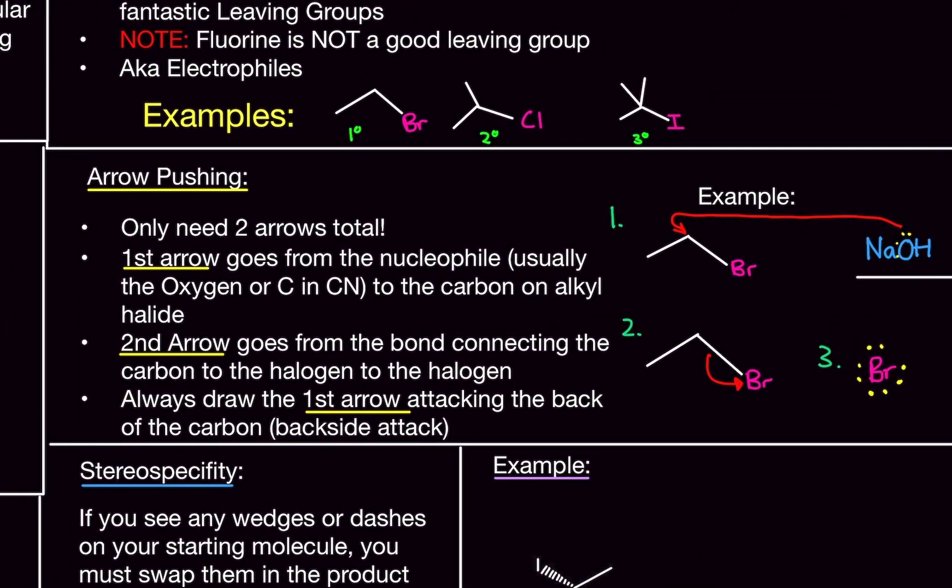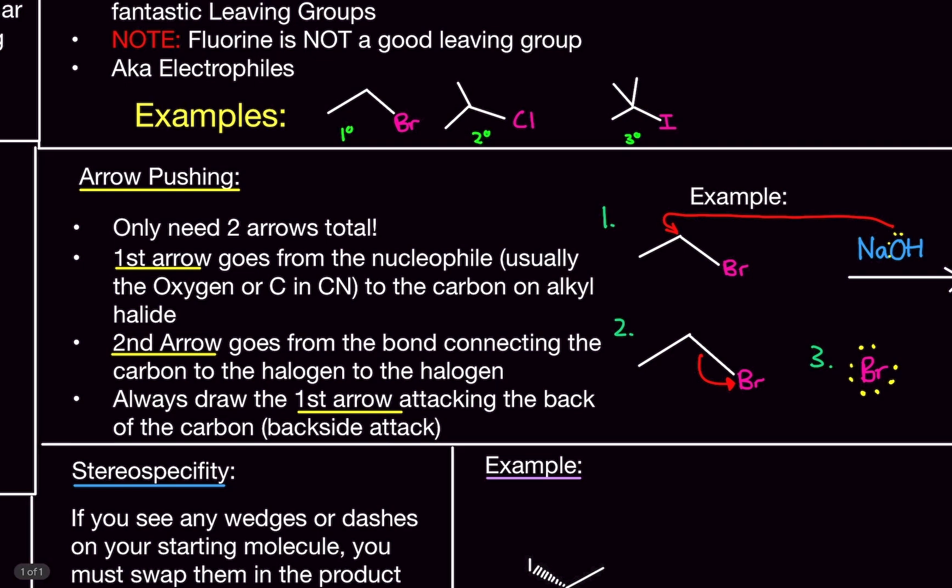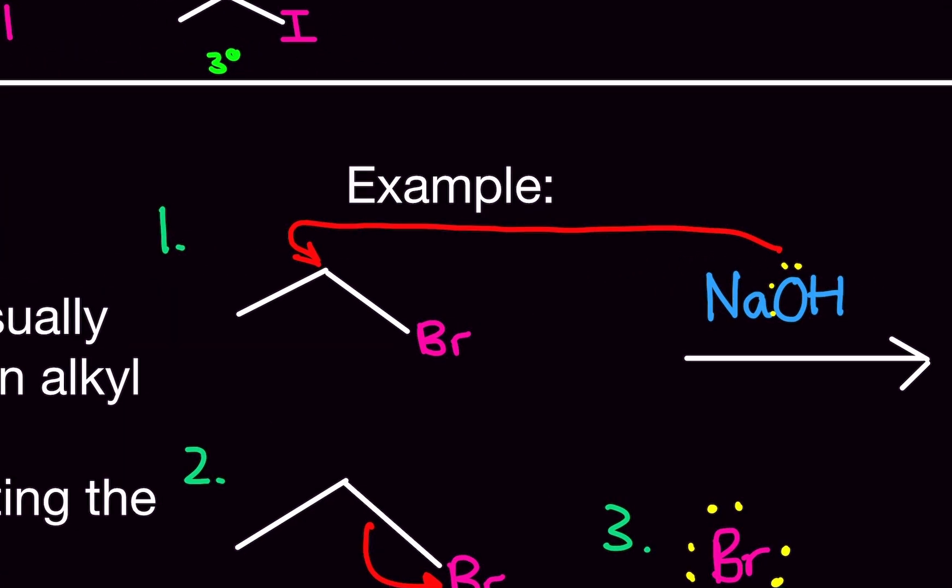Now, let's talk about arrow pushing here. You only need two arrows in total. That is it. So, the first arrow always, always, always starts from the nucleophile, which is usually an oxygen or a carbon if it's cyanide. And we start there from the nucleophile and attack the backside of the carbon atom that has the halogen attached to it. So, this is the carbon right here that has the halogen attached to it. That is where we are attacking.